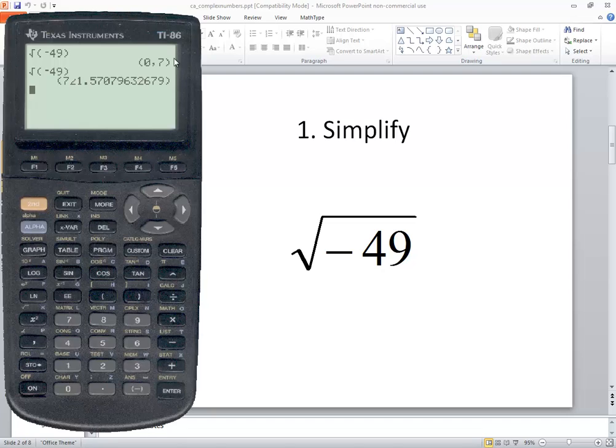Depending upon your options under mode, you may not see that zero comma seven. That's what we want though. This is actually giving us r and theta if you're familiar with polar form.